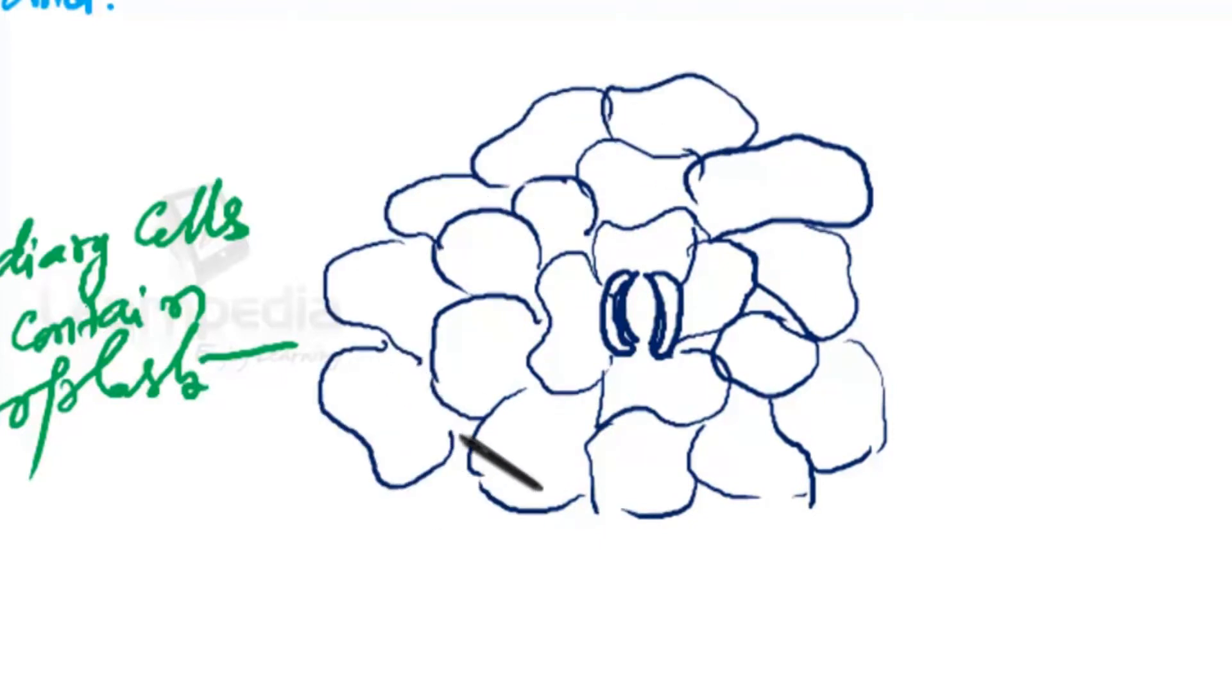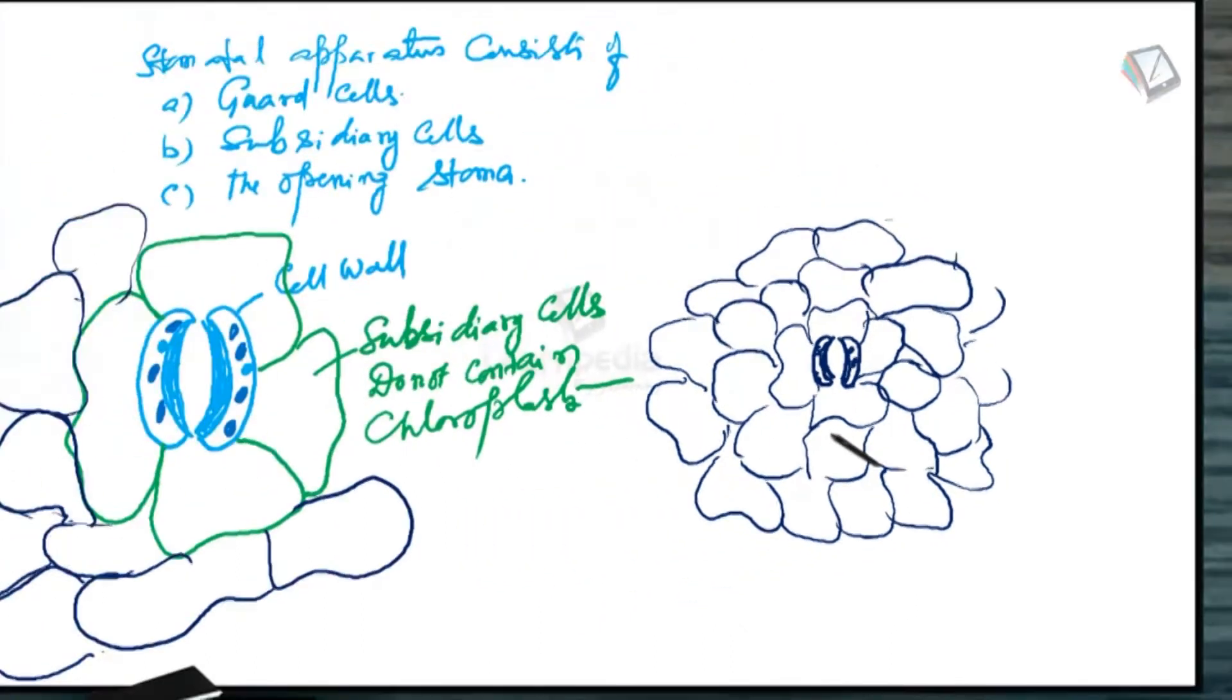These epidermal cells also do not have chloroplasts. In the entire epidermis, the only cells that contain chloroplasts are these guard cells. This is the stomatal apparatus complete structure.